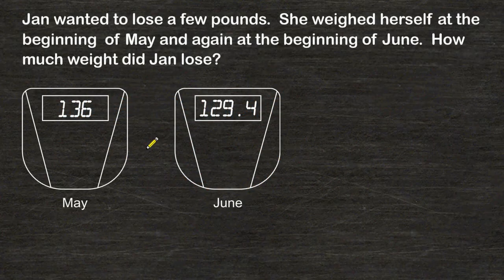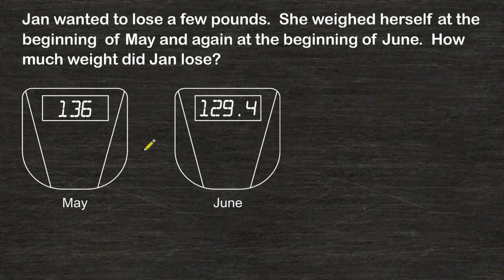In this problem, it reads that Jan wanted to lose a few pounds. She weighed herself at the beginning of May and again at the beginning of June. How much weight did Jan lose? To figure out how much weight Jan lost, we have to figure out what is the difference between 136 and 129 and 4 tenths.